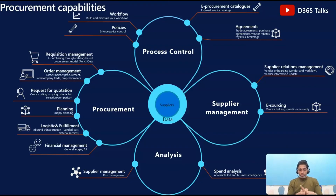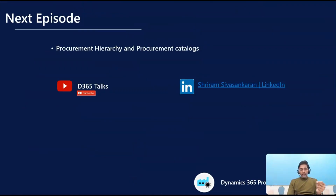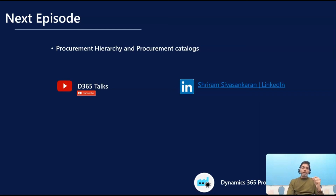So that's at a very high level what the Procurement and Sourcing module is going to be, what business process areas we are going to cover, and what additional capabilities we will cover in this series. In the next episode, we will be talking about procurement hierarchy and procurement catalogues. Don't forget to subscribe to the channel D365 Talks or follow my profile on LinkedIn to get regular updates whenever I post videos related to Dynamics 365 F&O. Thanks for watching — have a nice day, see you soon in Episode Number 2. Until then, Sriram Savishankaran signing off.